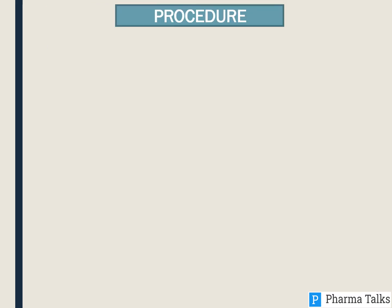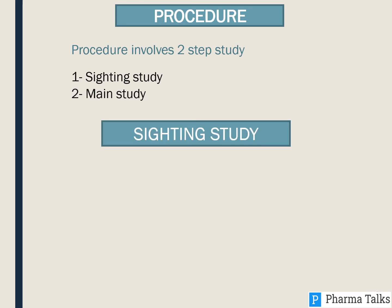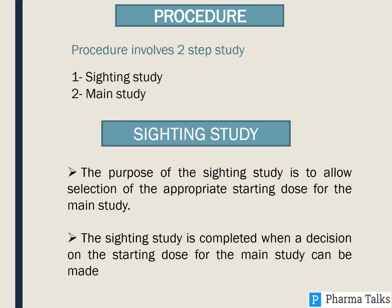Procedure: It involves two steps — a sighting study and a main study. The purpose of the sighting study is to allow selection of the appropriate starting dose for the main study, and it is completed when a decision is made on the dose.